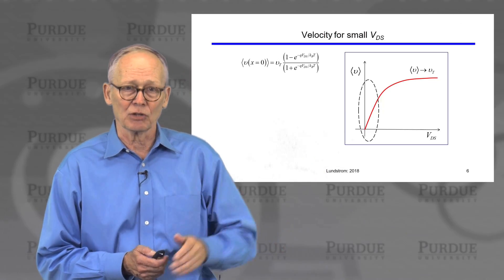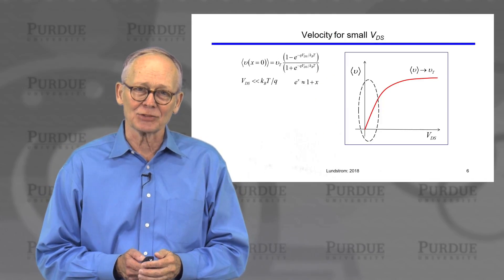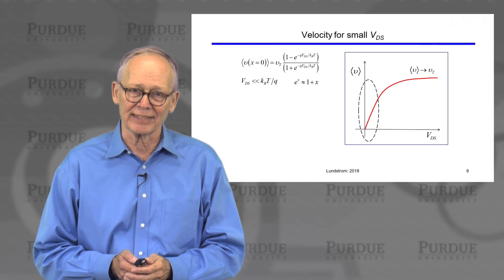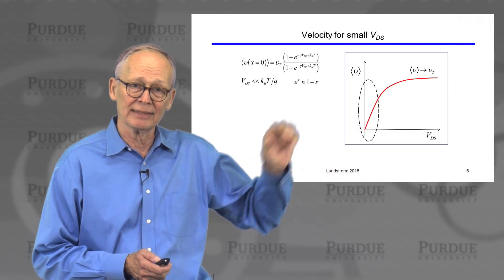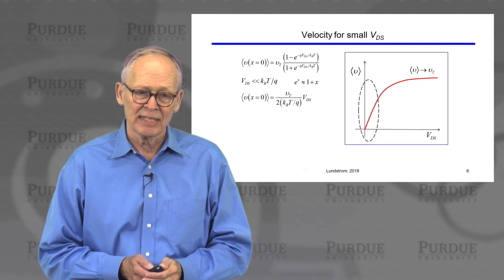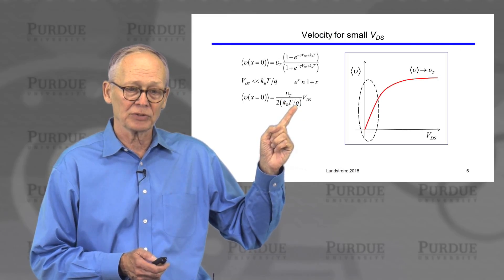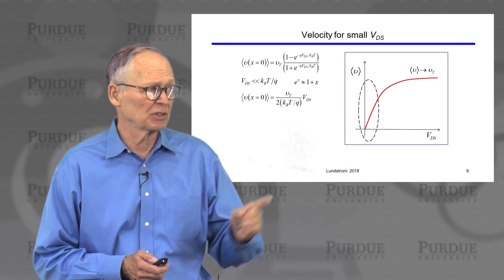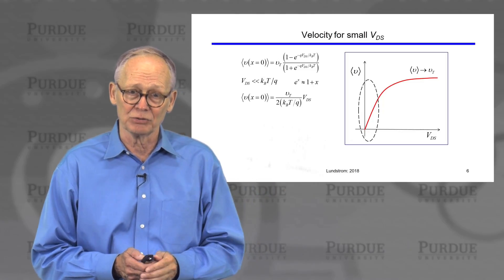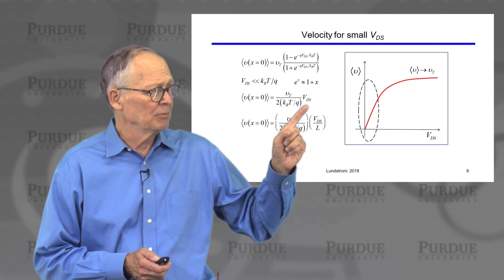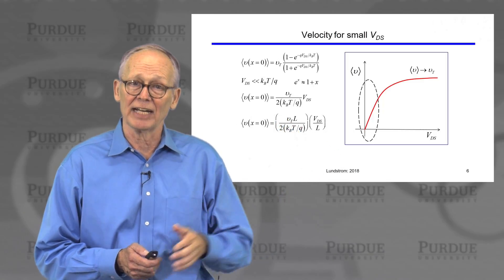Let's look more carefully at the low drain-to-source voltage limit. Here's our general expression. We can expand it assuming that the drain-to-source voltage is small compared to kT. We remember that e to a small number is one plus that small number, so we can expand the exponentials in this expression. If we do that, something remarkably simple happens. For small drain-to-source voltage, the velocity is proportional to VDS, and the constants of proportionality are the unidirectional thermal velocity divided by 2kT/q. Let me multiply and divide by length — so I've done nothing.